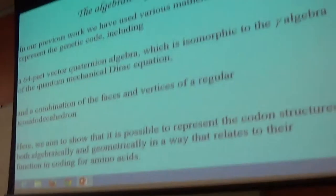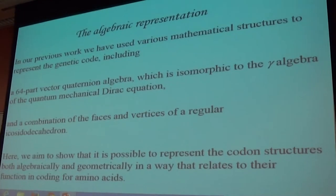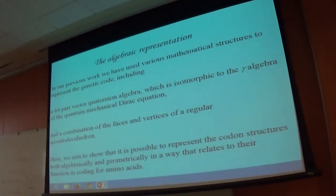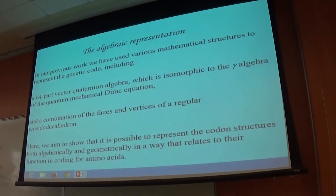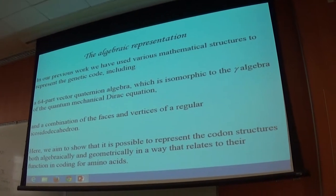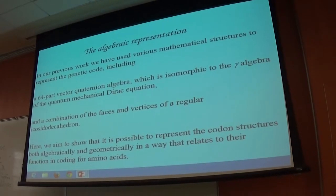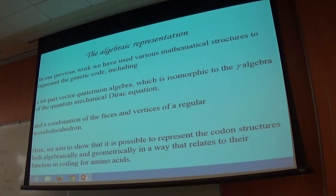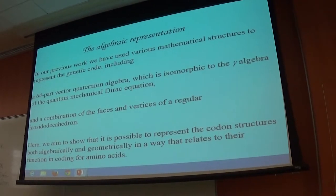We've used quite a few mathematical structures — algebra and geometry, and algebra connected with geometry. They include a 64-part vector quaternion algebra, which I'll show you in a moment, because that's what I'm going to use here. This algebra is isomorphic to the gamma algebra of the Dirac equation. A combination of the faces and vertices of a regular icosidodecahedron can also be used. They're closely related — it's the same mathematics, one's algebra and the other's geometry.